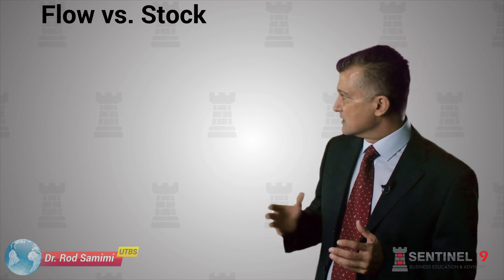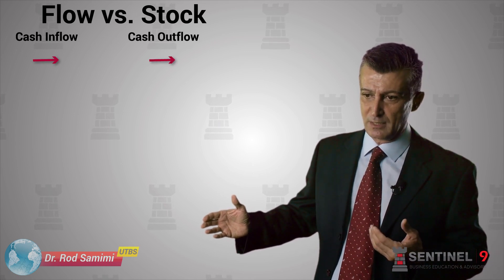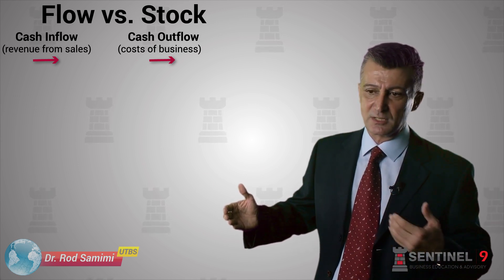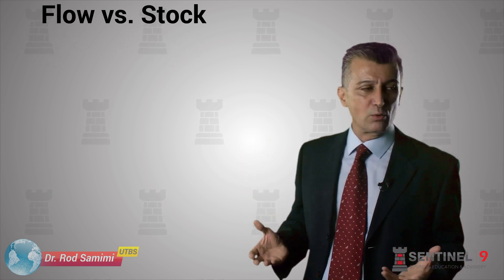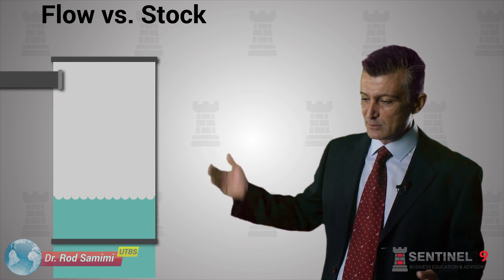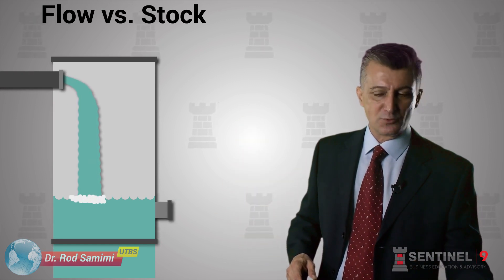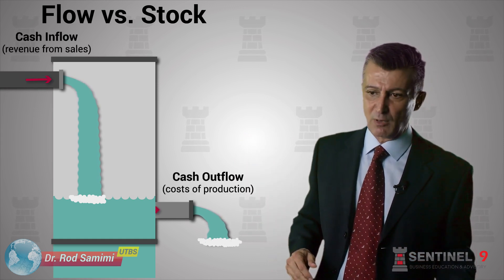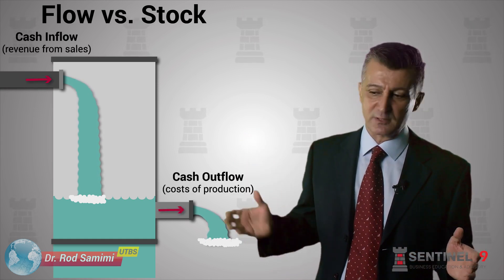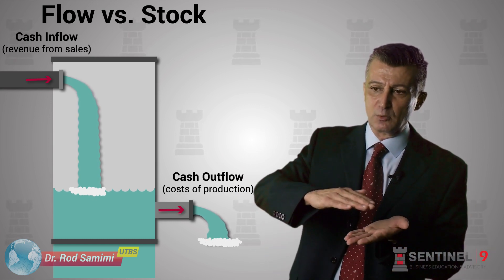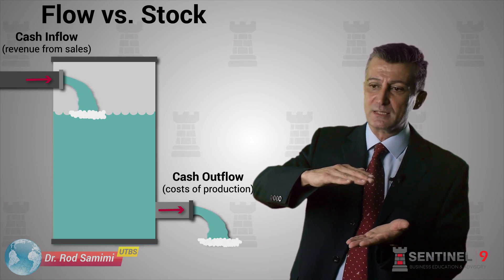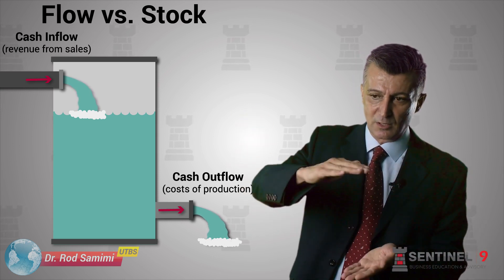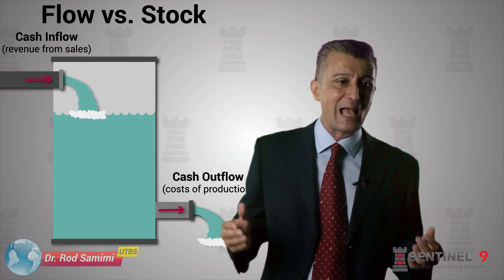By way of example in the business context: we have cash flow coming in and cash flow going out — cash coming from sales, and expenditure, both capital and operational, going out. Or in a physical analogy, we have a bathtub where water is coming through a tap and there is a drain hole where water is draining out. Over a period of time, if there is more flow coming in than draining out, there will be a greater amount of water in the bathtub — that is a stock variable.